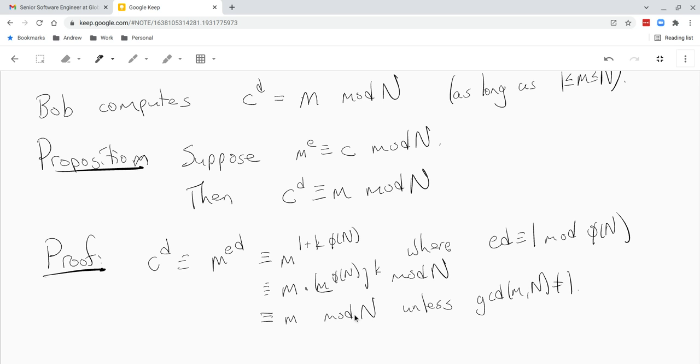But we just have to think about it and just assure ourselves that it's very unlikely that m would have, that the gcd of m and n would be not equal to 1. Because if, so, this proposition only works if gcd of m and n is 1.